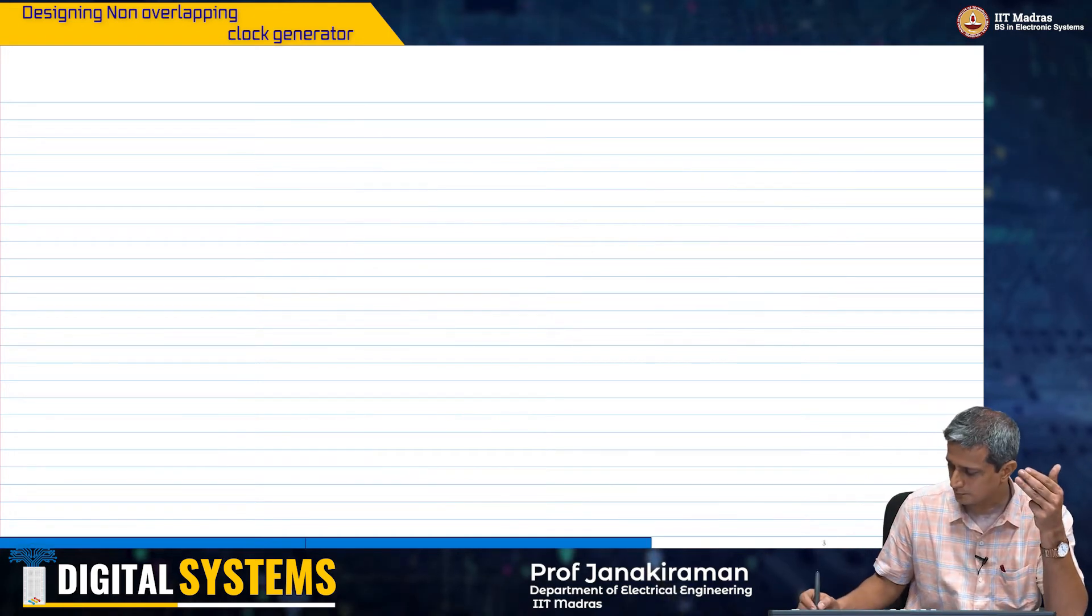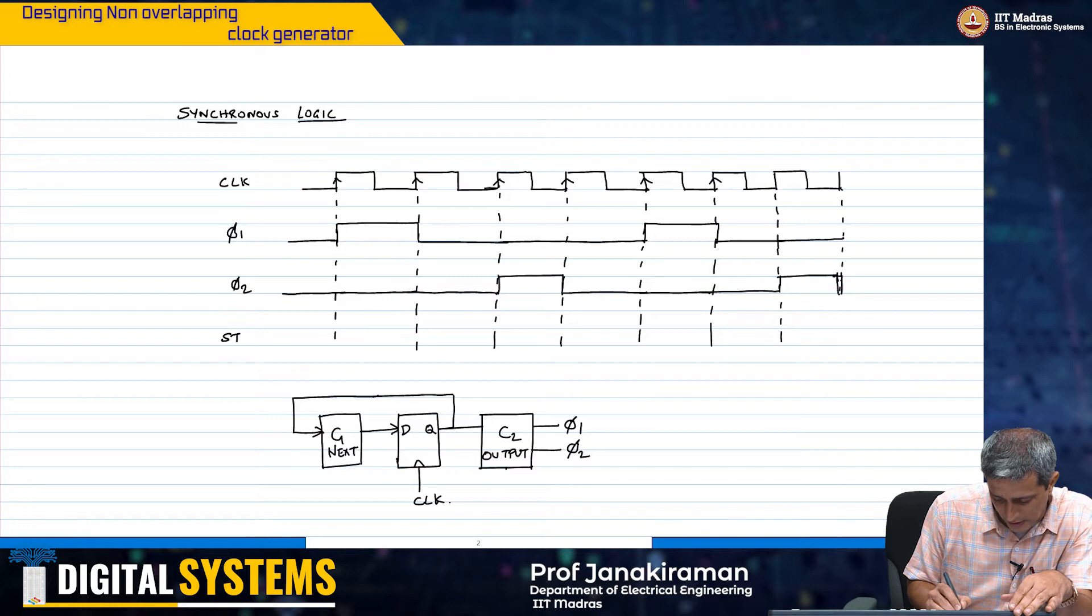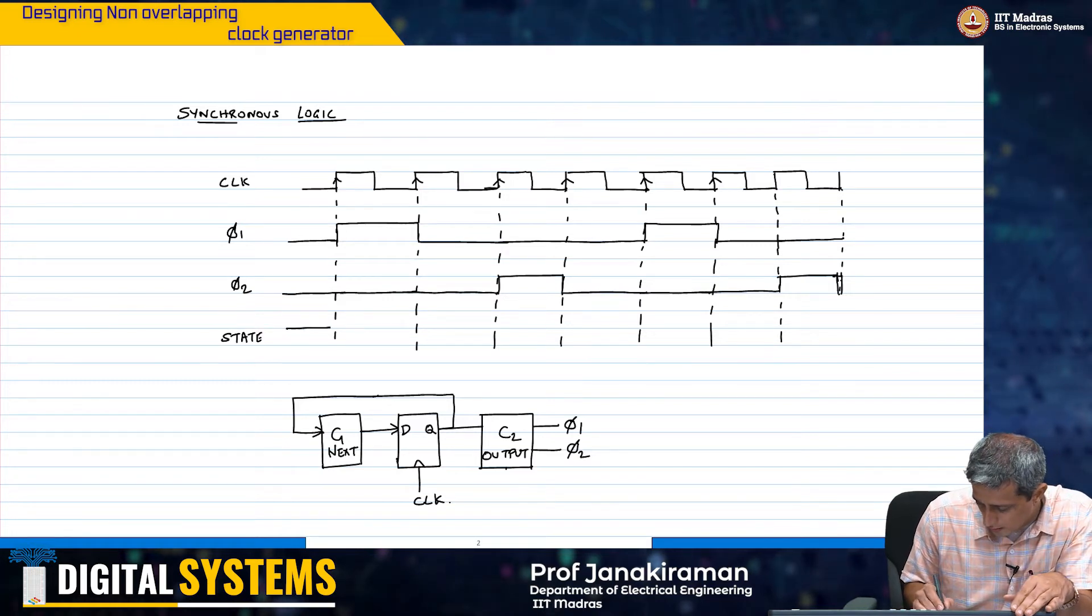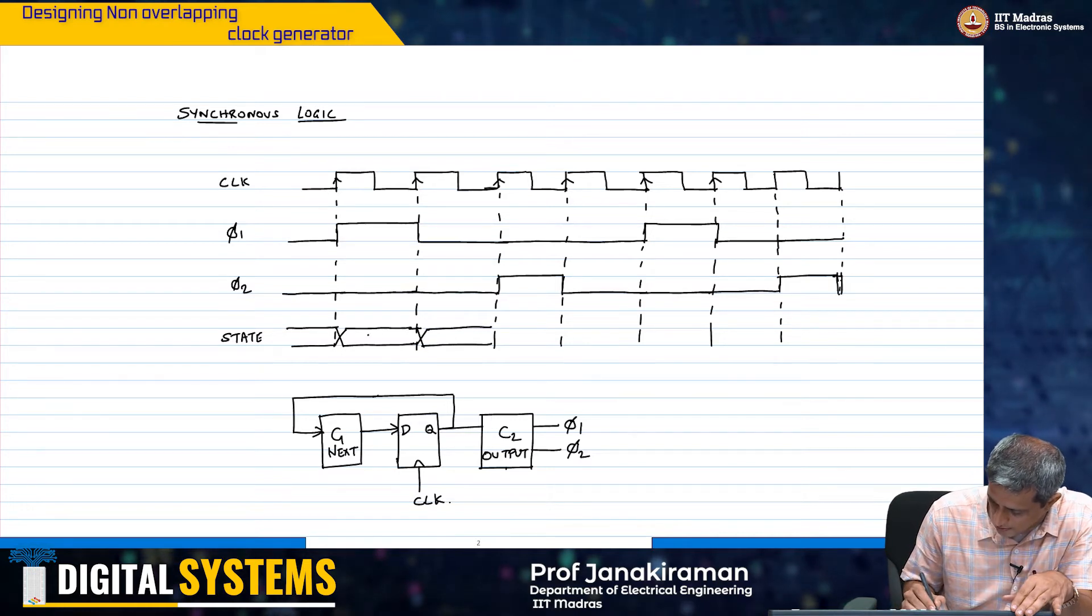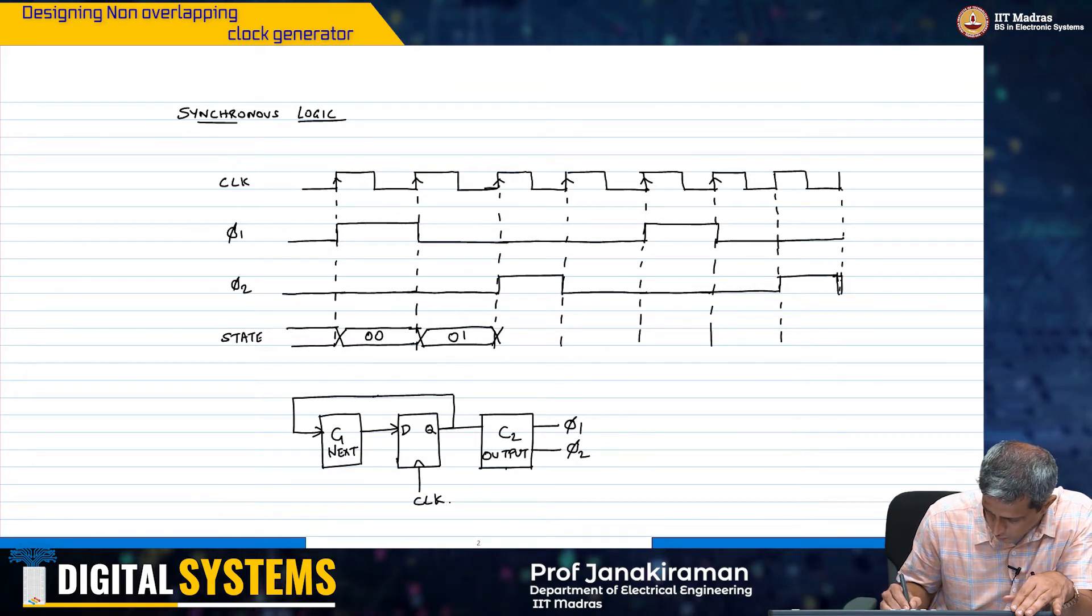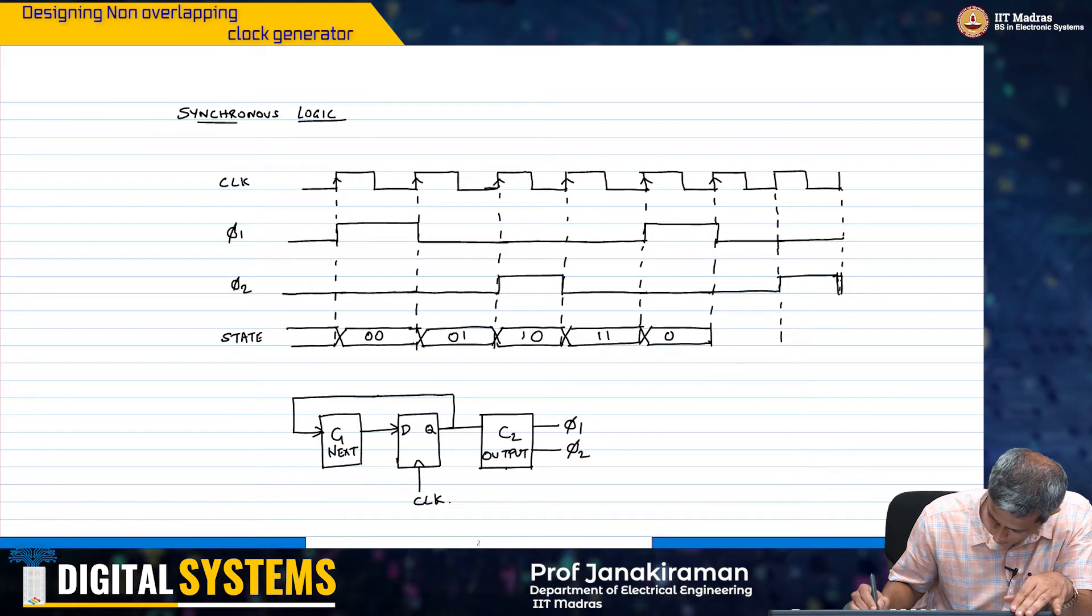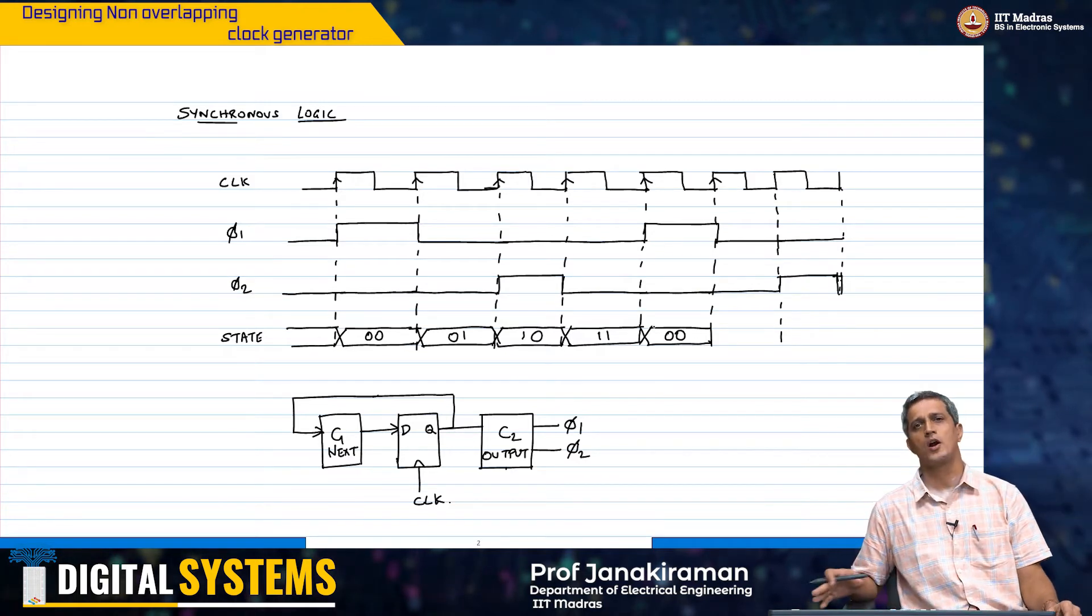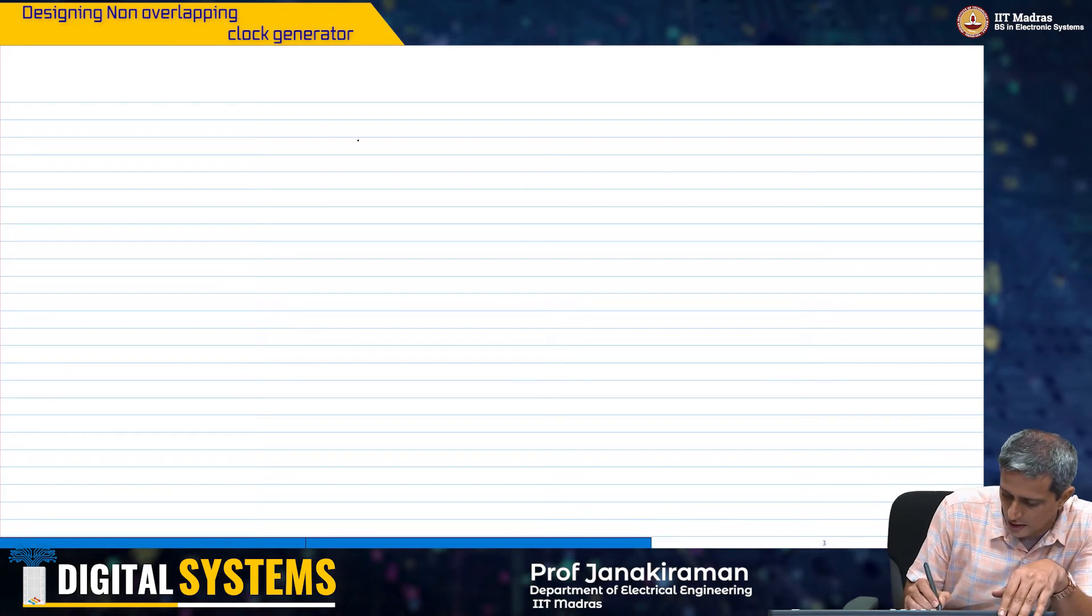If I look at this clock, I am looking at 4 states. I am looking at 4 different states that my sequential circuit is going through. And that is simply 0 0, 0 1, 1 0 and then 1 1, and then you are back to 0 0. This is what we are going to do and we are going to simply look at how to generate phi 1 and phi 2 based on this sequential logic.